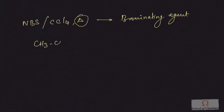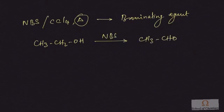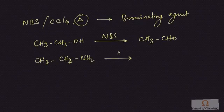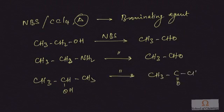In the absence of light, NBS behaves as an oxidizing agent. For example, ethanol treated with NBS in the absence of light gives acetaldehyde. Similarly, ethanamine treated with NBS also gives acetaldehyde. When a secondary alcohol like propan-2-ol is treated with NBS, it gives propanone. These three reactions prove that NBS can act as an oxidizing agent in the absence of light.